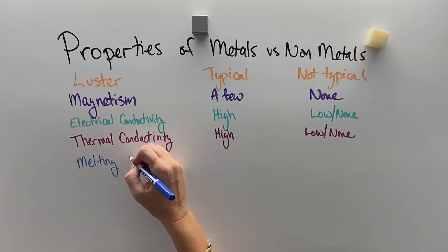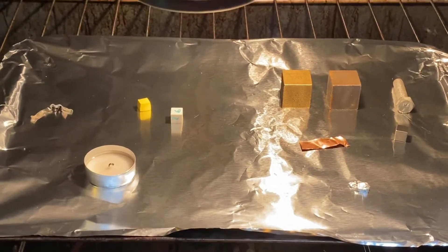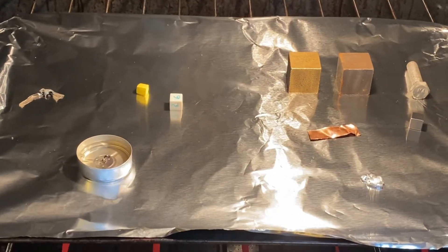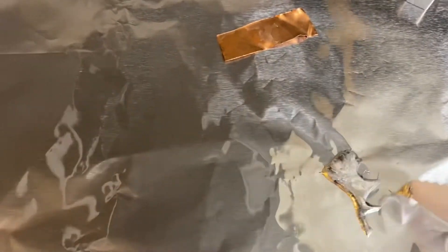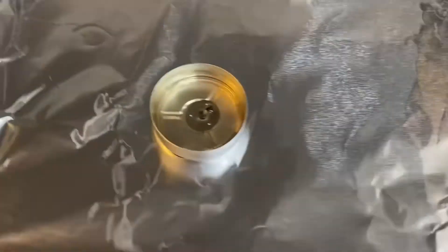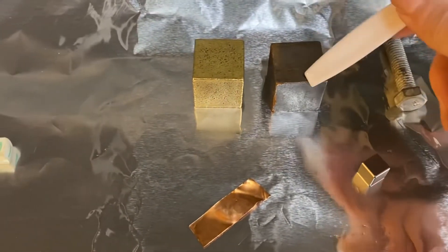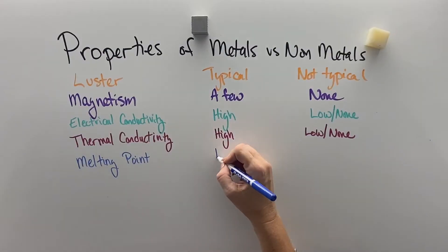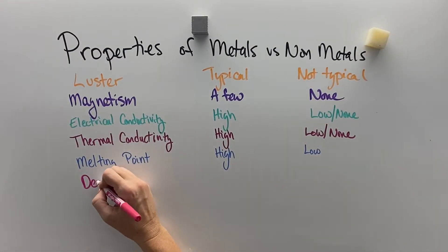Another important heat-related property is the melting point. We can see when we put metals and non-metals in the oven that the metals on the left get a lot softer and squishier when heat is applied. There's one metal on the right, gallium, that melts at a very low temperature. But these non-metals would not be very good for high-heat applications, whereas these metals all stayed solid. In general, metals are better for high-heat scenarios.